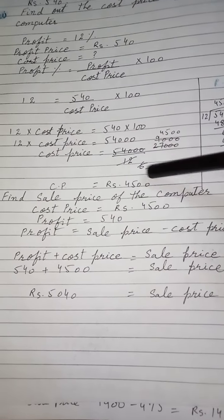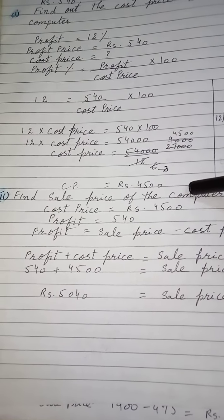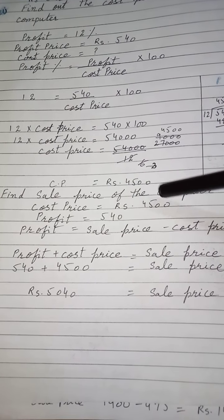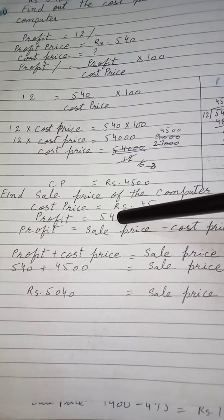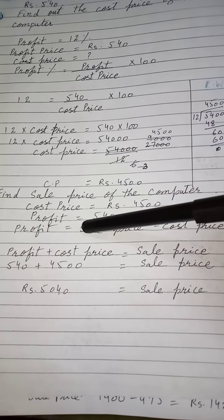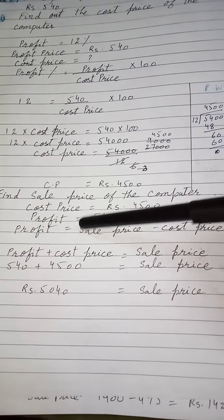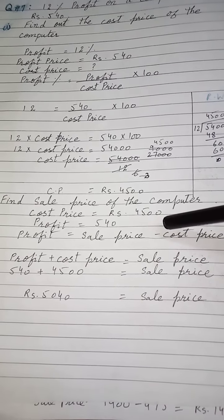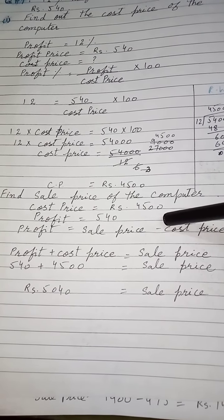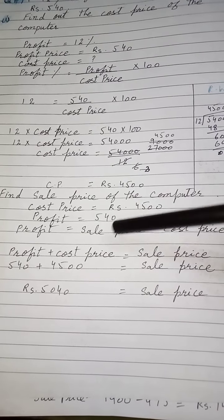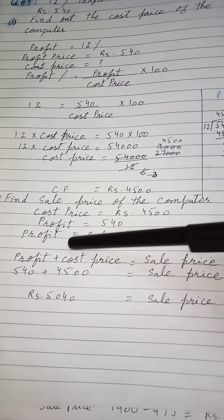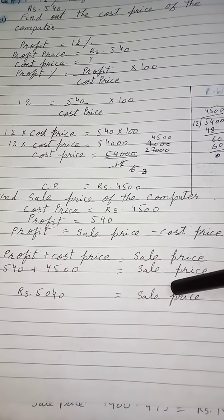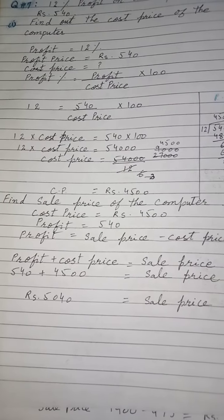Sale price بتانی ہے۔ Cost price اب 4500 آگئی ہے، profit پہلے given تھا 540۔ Formula لگائیں گے: profit is equal to sale price minus cost price۔ Sale price find out کرنی ہے تو cost price دوسری سائڈ پہ جا کے plus ہو جائے گی۔ Profit اور cost price کو plus کیا تو 5040 sale price آگئی۔